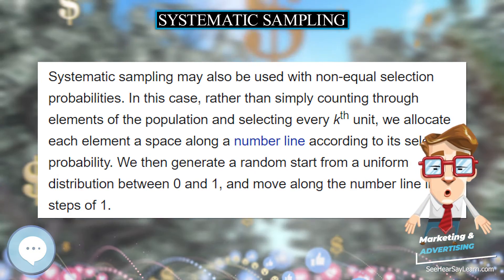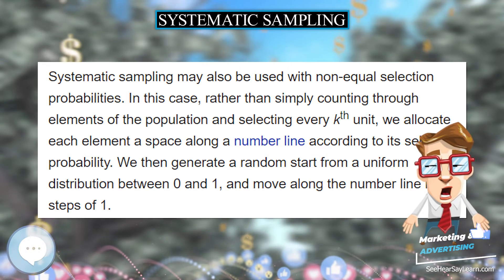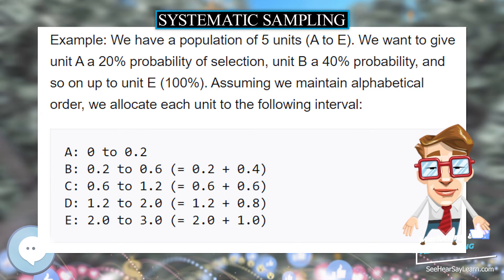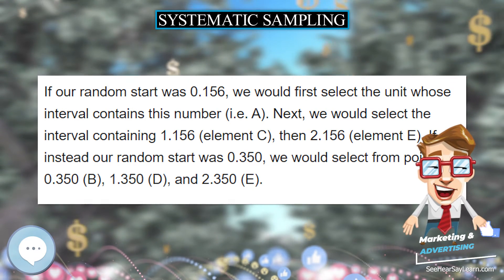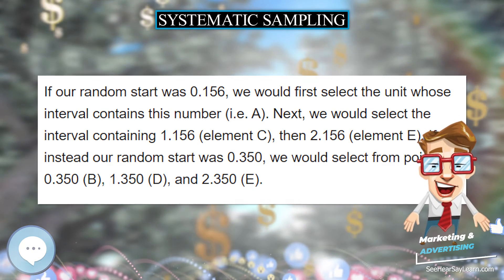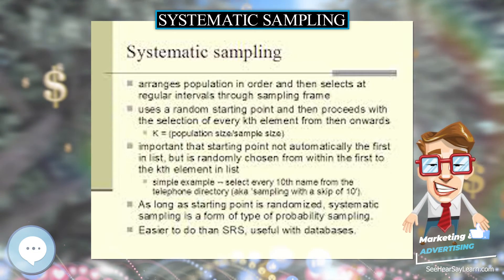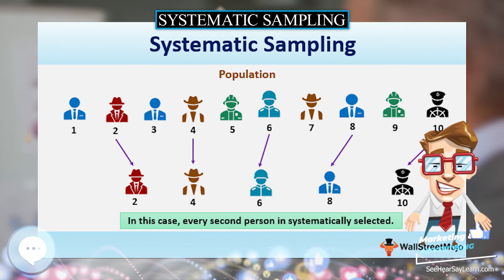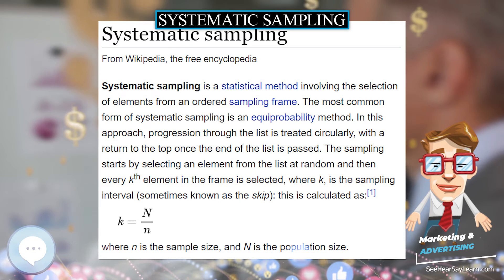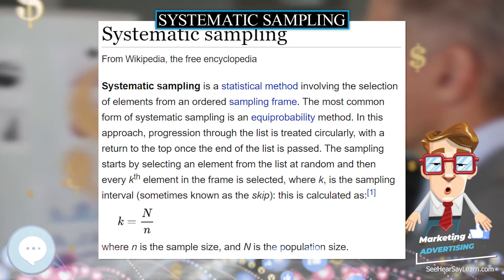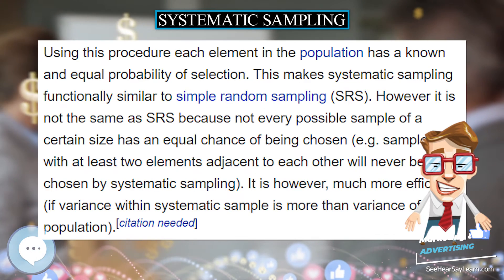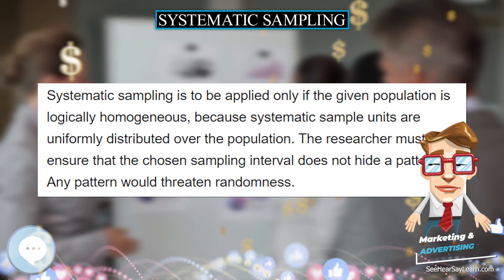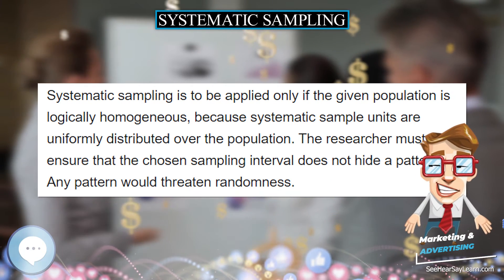Systematic sampling may also be used with non-equal selection probabilities. In this case, rather than simply counting through elements of the population and selecting every kth unit, we allocate each element a space along a number line according to its selection probability. We then generate a random start from a uniform distribution between 0 and 1, and move along the number line in steps of 1. For example, we have a population of 5 units, A to E. We want to give unit A a 20% probability of selection, unit B a 40% probability, and so on up to unit E at 100%.